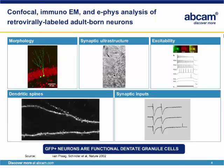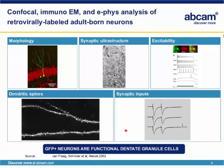Using this method, initially as a postdoc in Fred Gage's lab, we showed in collaboration with Henry van Praag that retroviruses could be successfully used to label dividing progenitor cells and look at the progeny of those cells. By looking at these neurons several weeks after infection, we could find GFP-positive cells showing the morphology of dentate granule cells, with the synaptic ultrastructure of a typical postsynaptic cell receiving functional synapses. These cells showed action potentials, had dendritic spines, and also showed functional synaptic inputs. This was proof that GFP-positive cells are functional neurons that integrate into the dentate gyrus network.